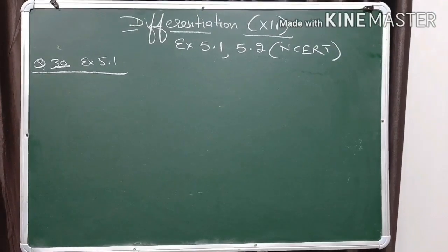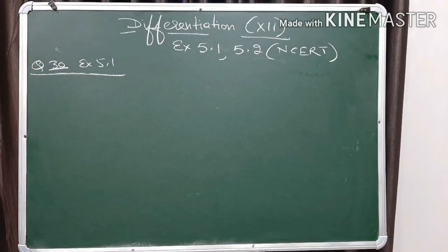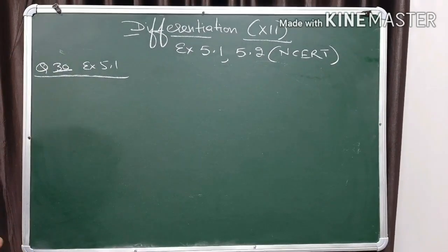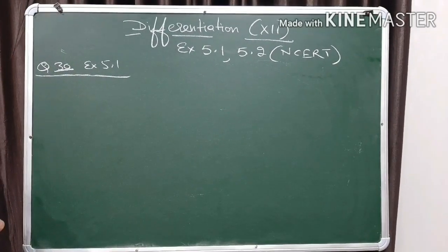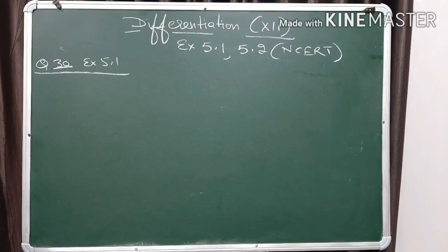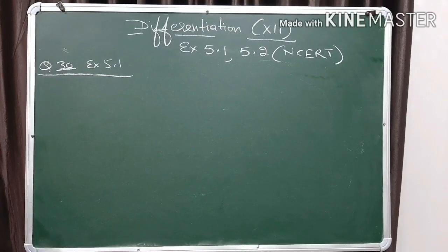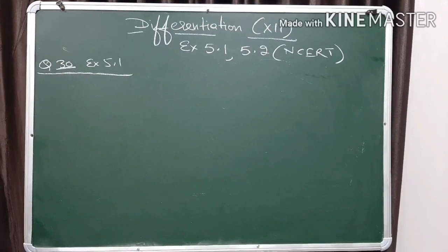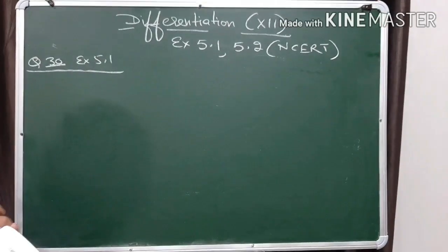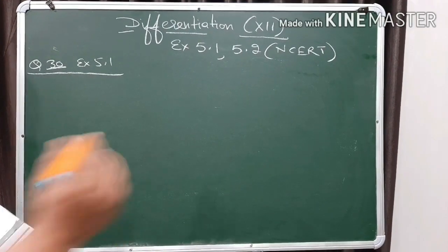Now let's solve this question. This question tells us that the function is changing at two points: one is at x equals 2 and one is at x equals 10. First of all, we'll take the limit at x equals 2.